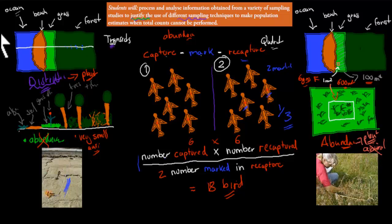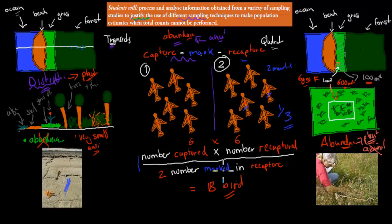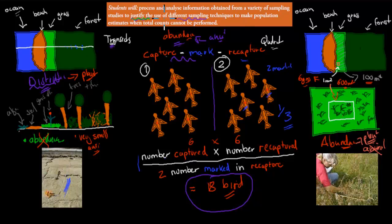That's why we need capture-mark-recapture — it allows us to get the abundance of animals. We can tag them and estimate their population that way. So to justify the use of different sampling techniques: we need them to measure both abundance and distribution of plants and animals. Using only one technique wouldn't be enough — we need a variety to cover all those factors.